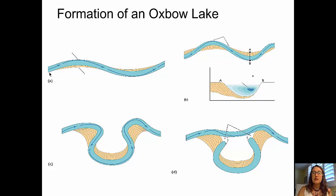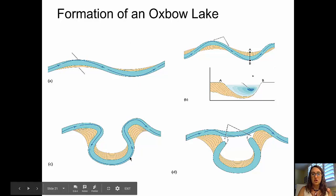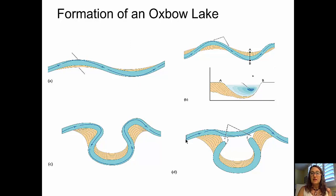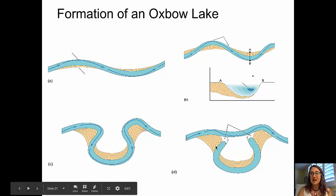Here we have four panels showing how oxbow lakes are formed. The first panel shows a young, fairly straight stream where a cut bank starts to form, a meander begins to develop, and a point bar starts on the inside. As the meander continues to grow through increased erosion, the stream becomes more sinuous — so curvy and meandering that in a case of high flow, the water cuts off the meander and continues down a new, straighter channel. That cutoff meander becomes the oxbow lake.